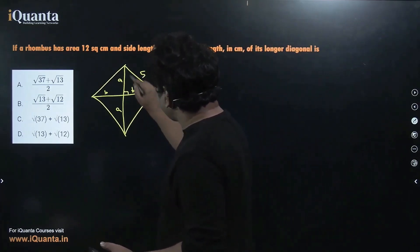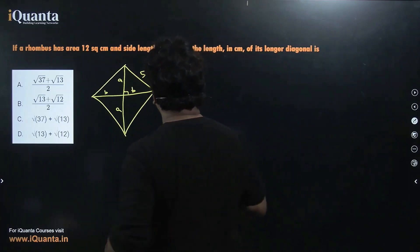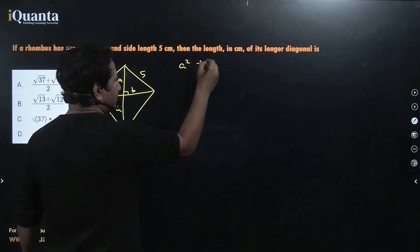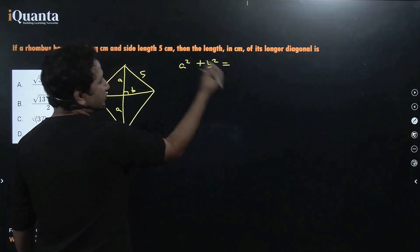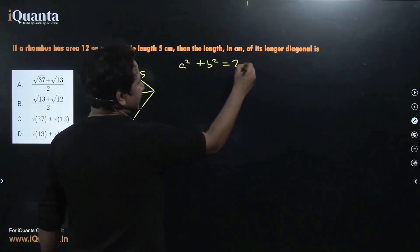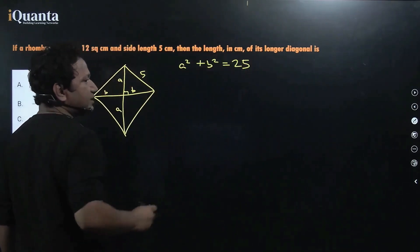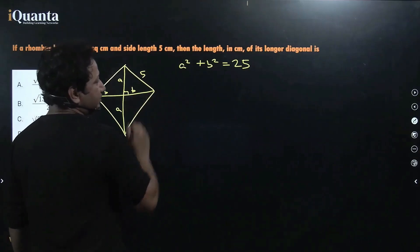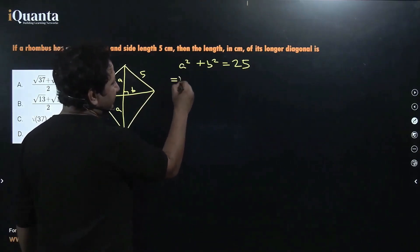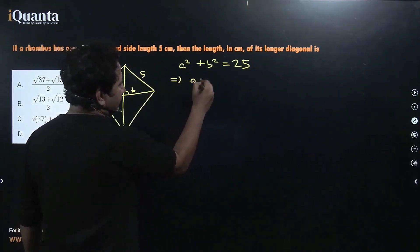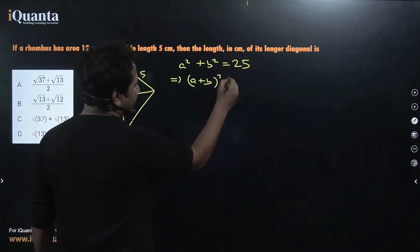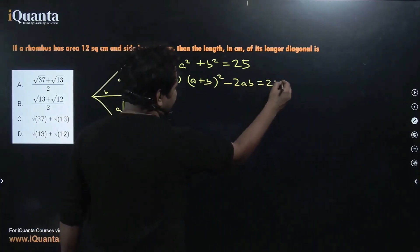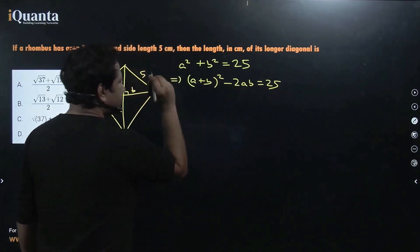We can apply Pythagoras' theorem in this triangle, giving us a² + b² = 5² = 25. Using this equation we can come to different conclusions. For example, I can write (a + b)² - 2ab = 25. I can also write (a - b)² + 2ab = 25.